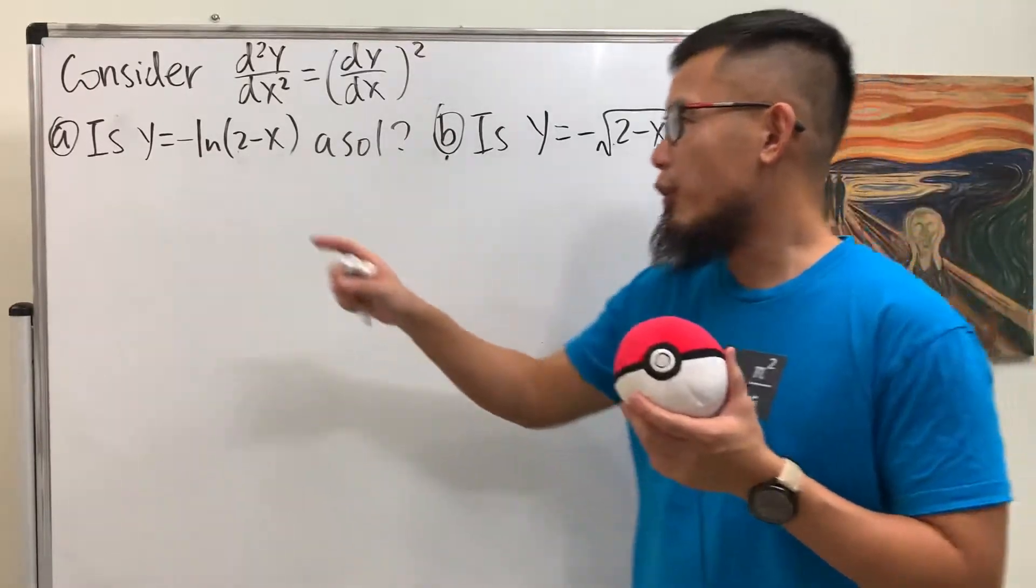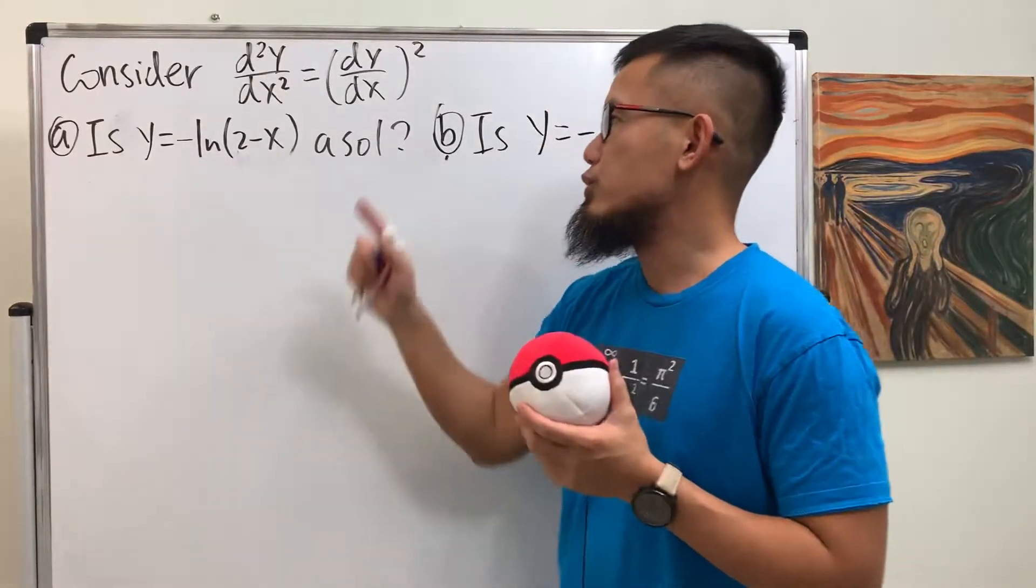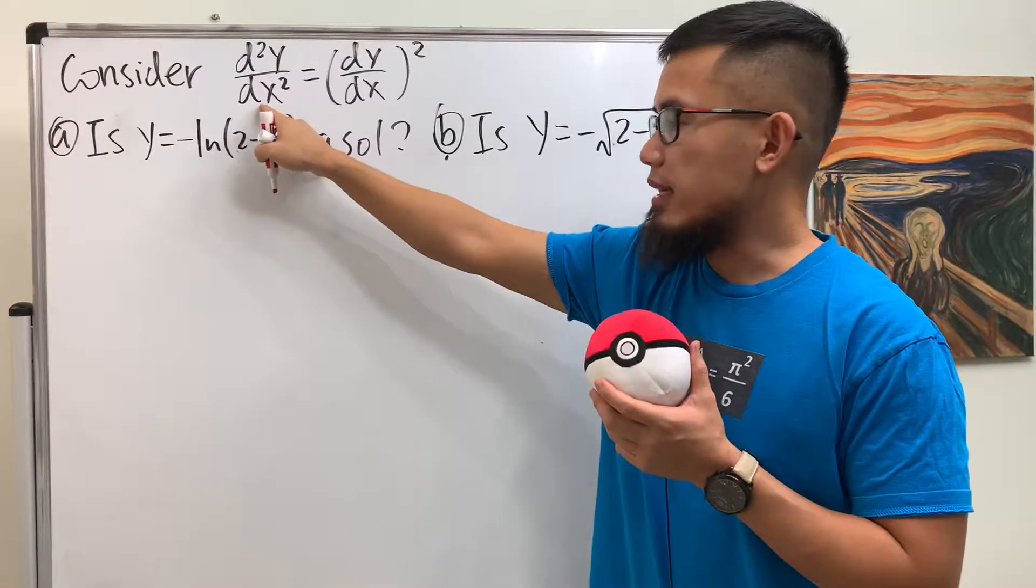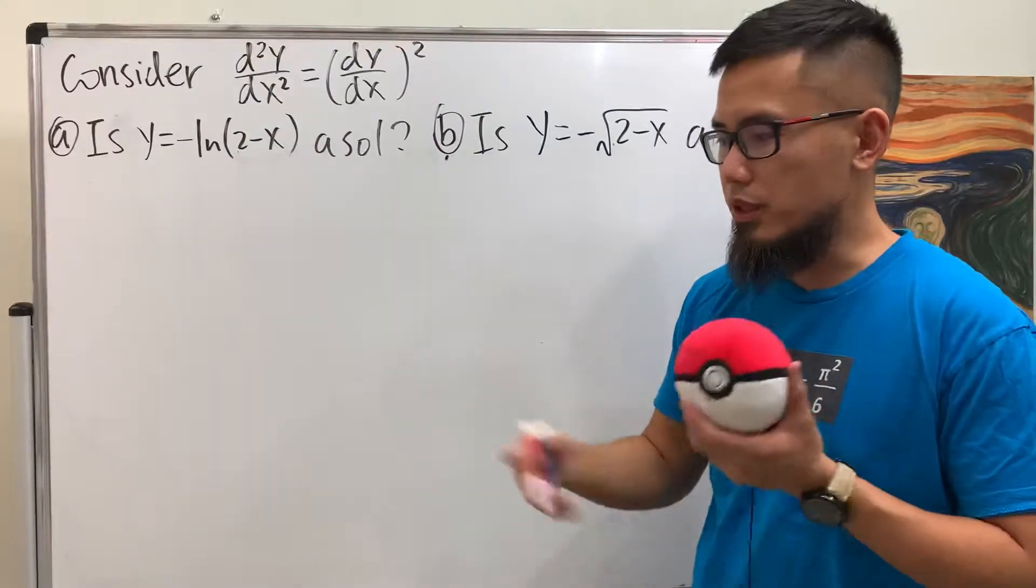For part a, is this right here a solution to this differential equation? Well, let's have a look. You see that right here we need a second derivative, so let's go ahead and just do the derivative twice.